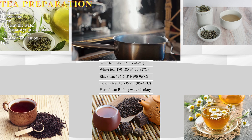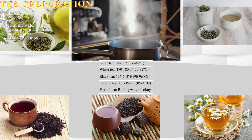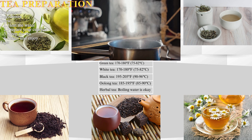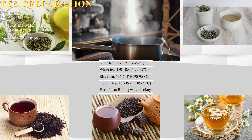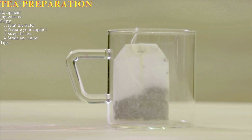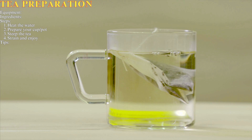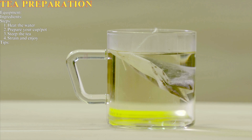Oolong tea: 185–195°F (85–90°C). For herbal tea, follow package instructions, but generally boiling water is fine. Step two: prepare your cup or pot. If using loose leaf tea, place one to two teaspoons per cup in an infuser or strainer; otherwise, simply place the tea bag in your mug or teapot.